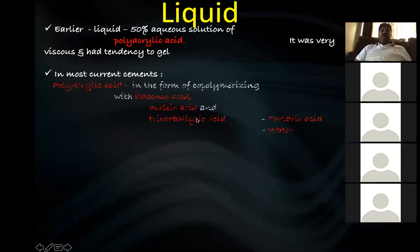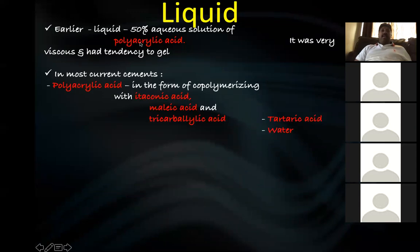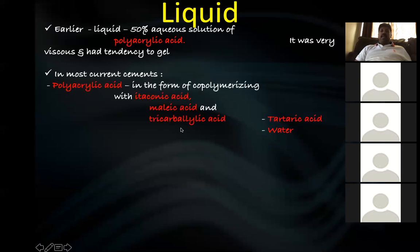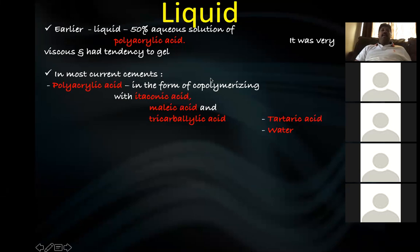Regarding composition, you should always remember: the liquid contains polyacrylic acid as the major component, co-polymerized with itaconic acid, maleic acid, and tricarboxylic acid. There are also two other important components: tartaric acid and water. This composition is asked from second-year UG exams all the way up to PG level.